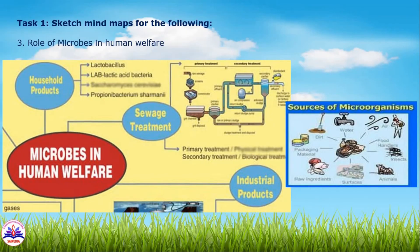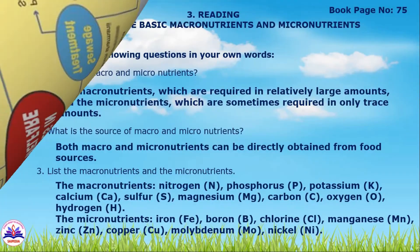The third topic is Role of Microbes in Human Welfare. Based on human welfare, microbes include household microbes, sewage treatment, and industrial products. You can use a mind map to show the source of microorganisms and how microbes relate to human welfare.